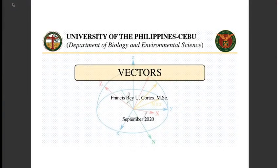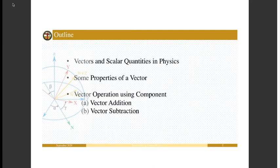Hello everyone, we are going to talk about vectors. So in physics, in our first lecture video, we are talking about different physical quantities. There are also ways to categorize physical quantities — they can be vector or scalar quantities. So it is very important to know the two kinds of physical quantities in physics. Here is the outline of our lecture for today: vectors and scalar quantities in physics, some properties of a vector, and vector operations using components.